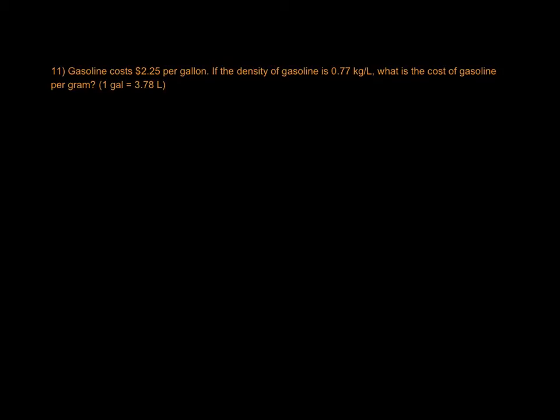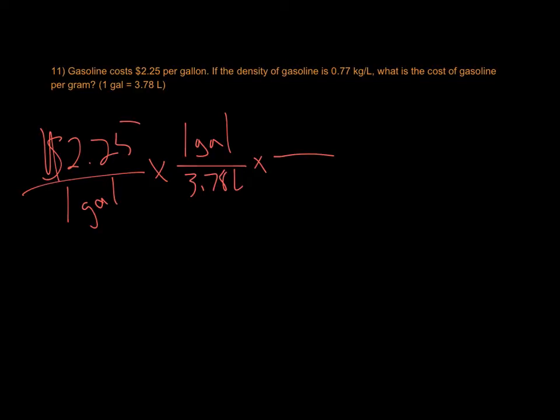The first one is converting gasoline costs from dollars per gallon to dollars per gram. I'm going to start with the price per gallon, which is $2.25 per one gallon. Then I'm going to convert gallons to liters. One gallon is 3.78 liters. Then I'm going to convert the liters to kilograms, because I was given the density in kilograms per liter. Then I'm going to convert kilograms to grams, because I want grams in my final answer. One kilogram is 1,000 grams.